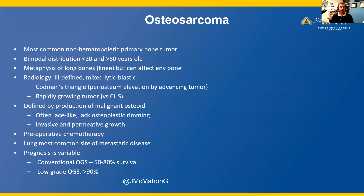Osteosarcoma is defined by the production of malignant osteoid, which is often lace-like and lacks osteoblastic rimming. Osteosarcomas are often invasive and have a permeative growth pattern. Most cases will require neoadjuvant or preoperative chemotherapy, though there are a couple of subtypes for which this is not recommended, and we'll discuss those in later videos. The lung is the most common site of metastatic disease. The prognosis of osteosarcoma is variable — conventional osteosarcomas have 50% to 80% overall survival; however, some low-grade osteosarcoma variants have relatively good prognoses with greater than 90% overall survival.